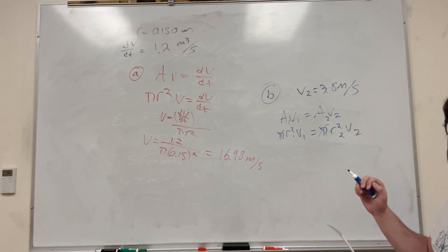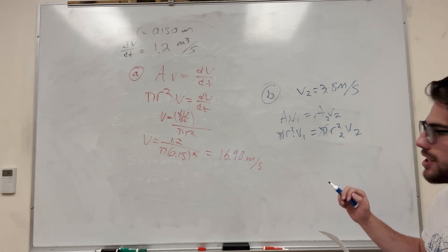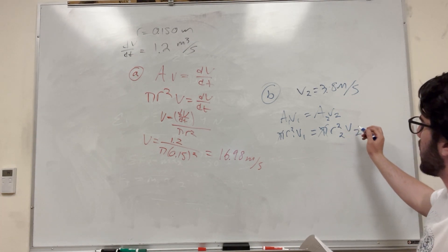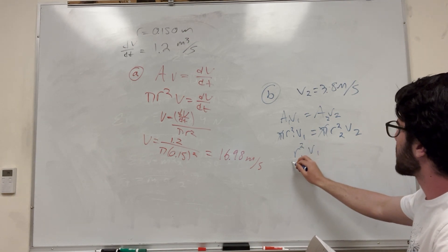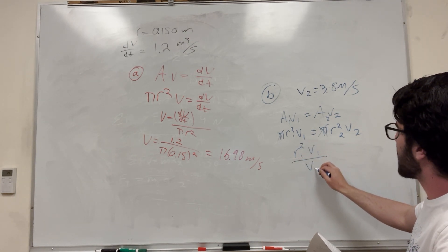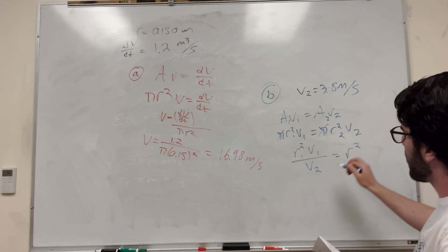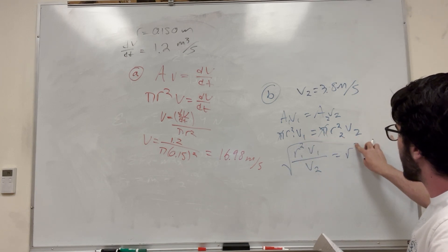We have radius 1, and we're trying to find radius 2. So we divide: r₁² times v₁ divided by v₂ equals r₂². We can take the square root of both sides to solve for r₂.